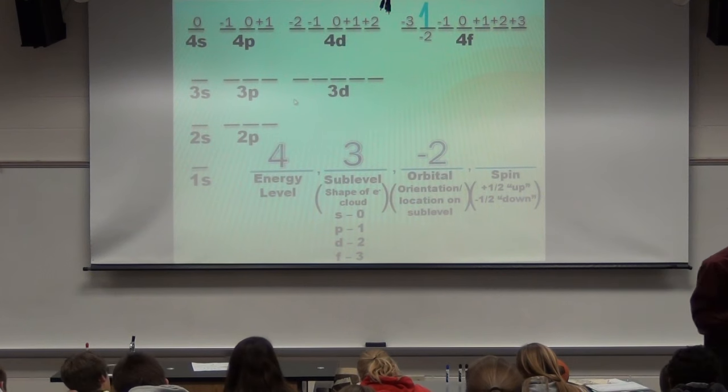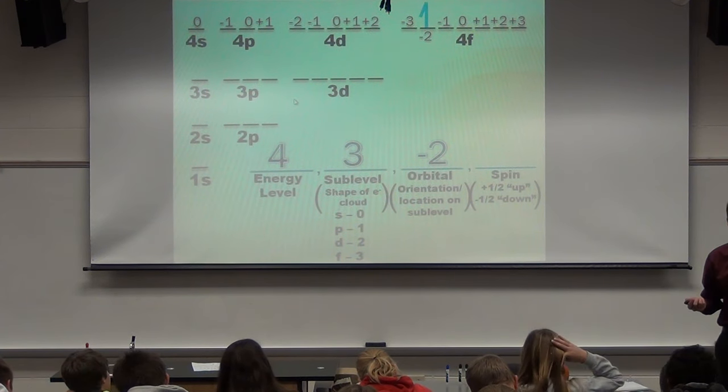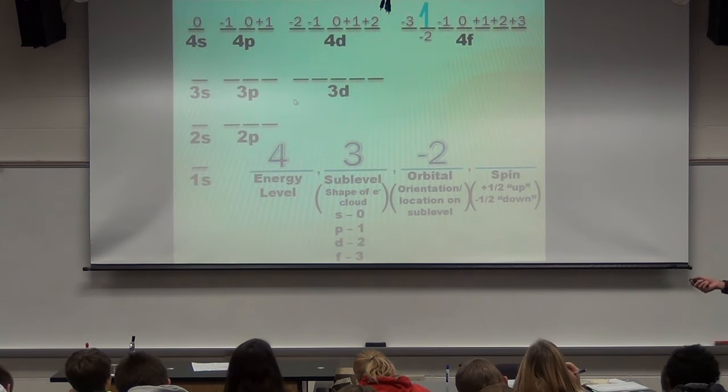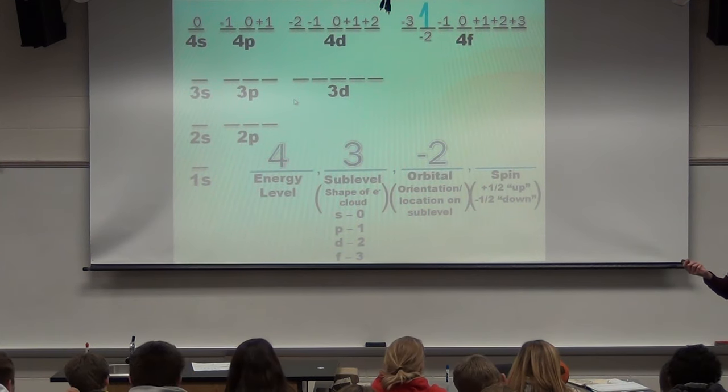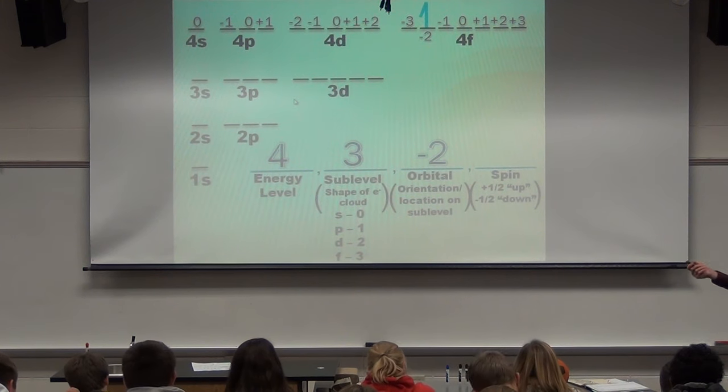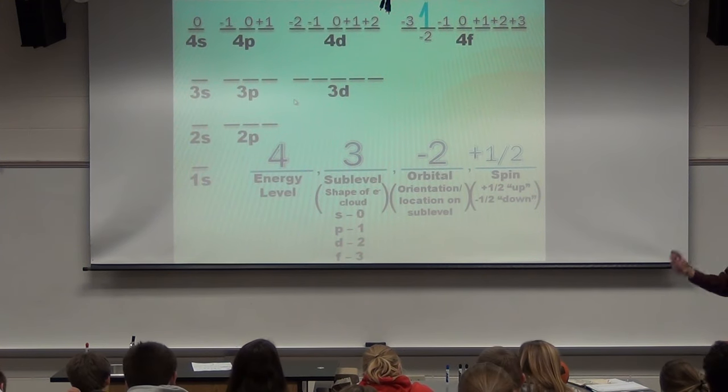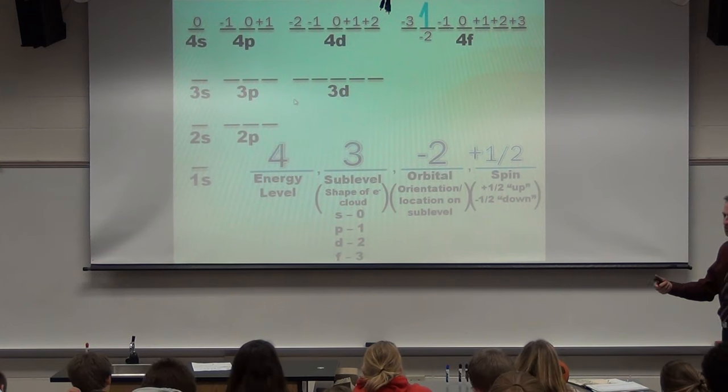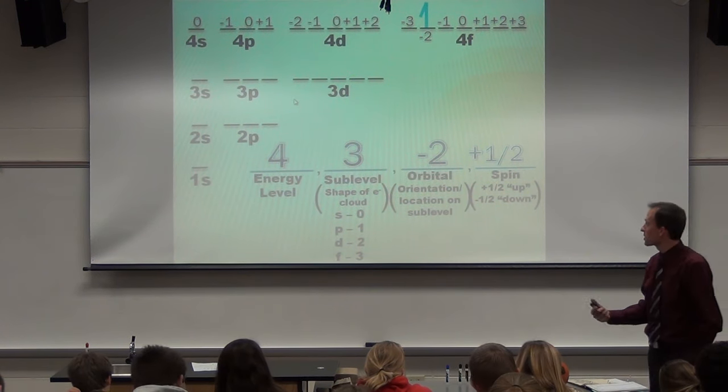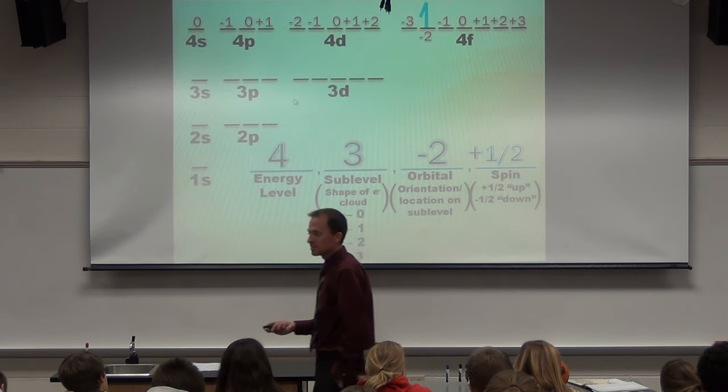The last one. Don't get confused by the plus and the minus. I'm already telling you how the numbers work. You either write a plus half or a minus half. That's it. It's literally if it's pointing up or if it's pointing down. So, this one's pointing up. So, it's a plus one half. So, the quantum number, the address for this electron is four, three, negative two, plus one half. Okay?